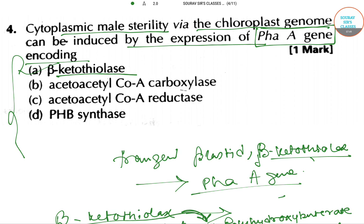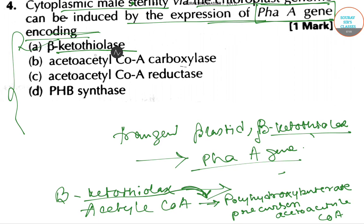Beta-ketothiolase is expressed by and encoded by the phaA gene, so this will be the correct answer for this question. Thank you for watching this video.